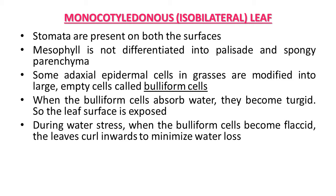During water stress, when bulliform cells become flaccid due to scarcity of water, the leaves curl inwards to minimize water loss. In normal conditions, bulliform cells are turgid and the leaf remains open, but during stress conditions with less water availability, these cells become flaccid and the leaf curls. This mechanism is provided in monocot leaves to avoid excess water loss.